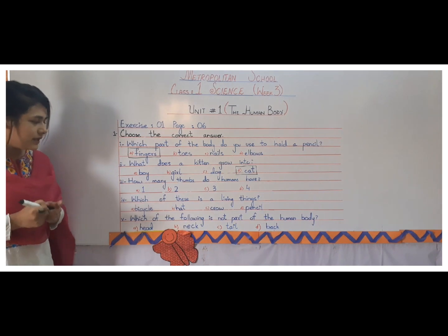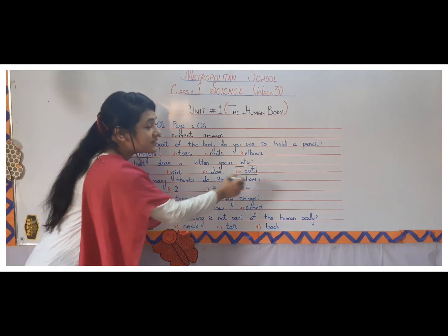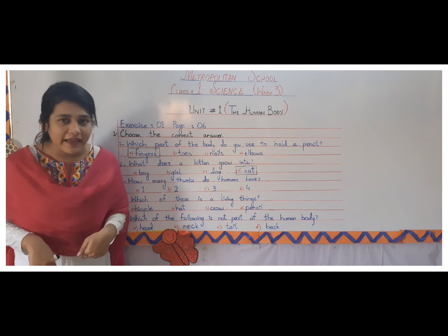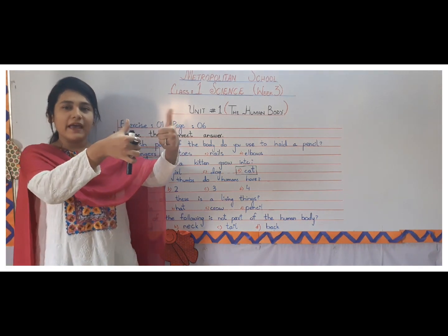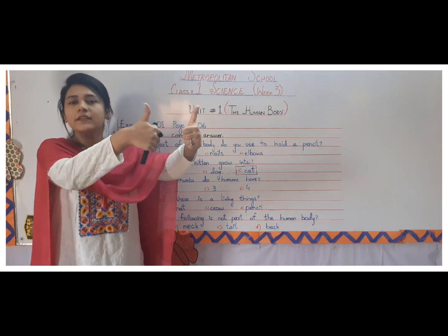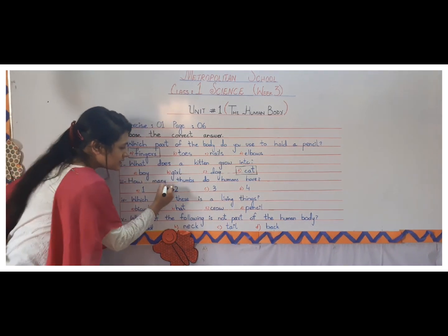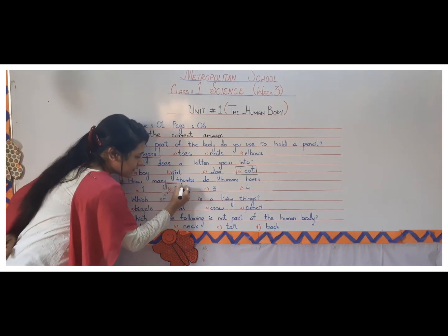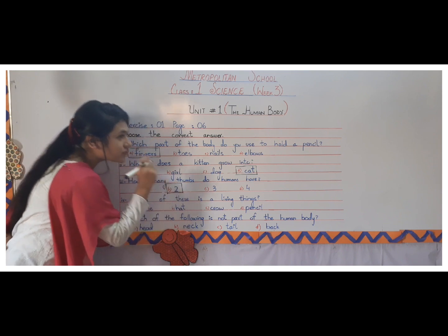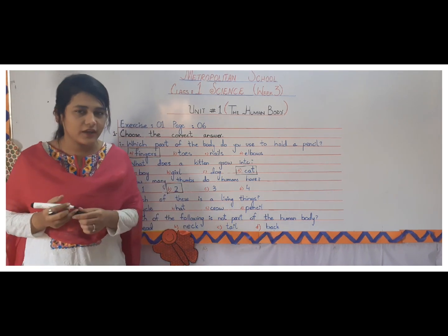Third one is: how many thumbs do humans have? I am a human, and how many thumbs do I have? I have one and two thumbs. So the answer is: all human beings have two thumbs.